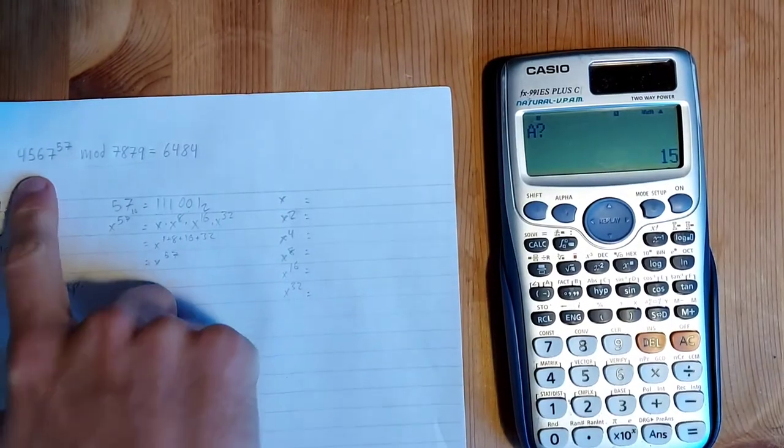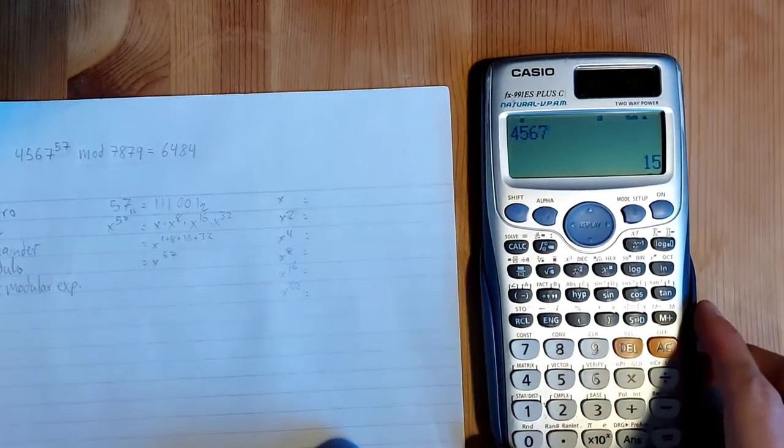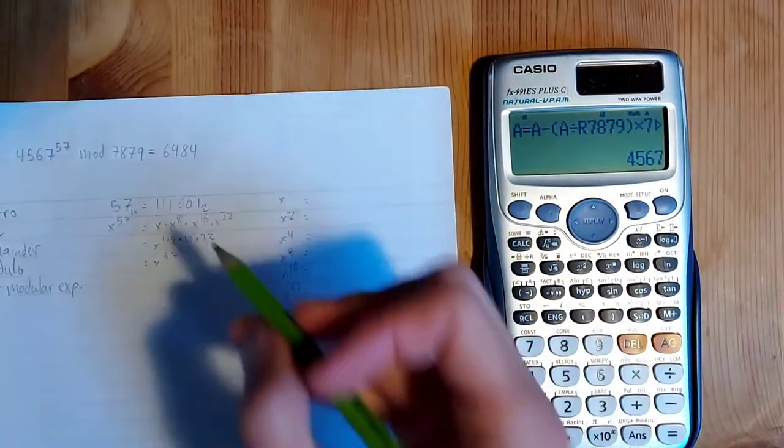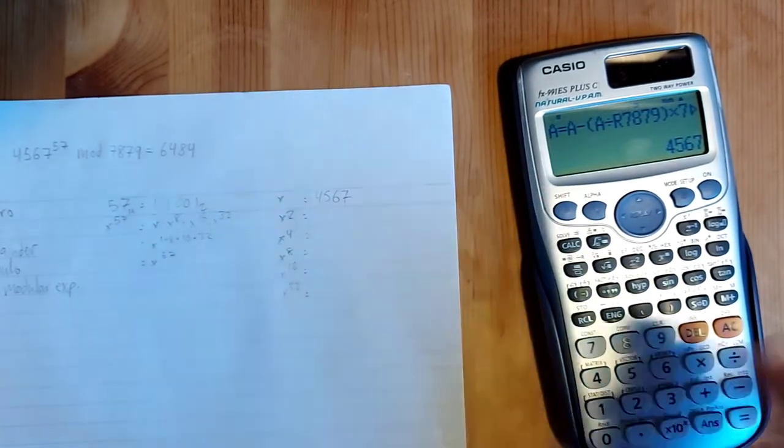So I'm going to put in 4567, and as you might expect, 4567 mod 7879 is just 4567.